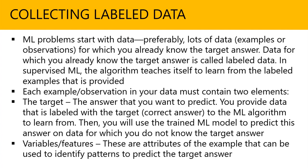And this is the power of machine learning. At first, you're actually telling it what to do, and then for any new data coming into the picture, it's going to start predicting accordingly, which is great. The other element required is variables or features. These are attributes of the example that can be used to identify patterns to predict the target answer. So these two elements — target and variables — are required when we're talking about collecting labeled data.